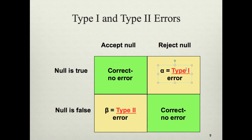Here, the null is true — there's no difference between the control group and the treatment group — however, we've rejected the null and found a difference. This is called a type 1 error. We want to make adjustments to our calculations to minimize type 1 error. In the social and behavioral sciences, we typically allow up to 5% error — meaning if the null is true and we reject the null, we want to make sure that we're doing that correctly 95% of the time.